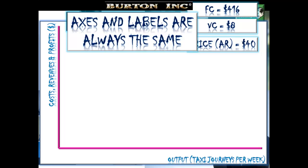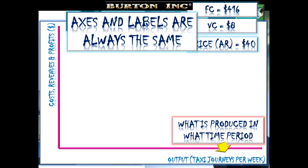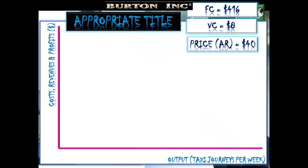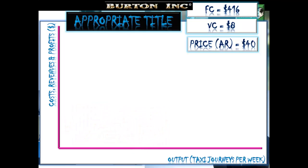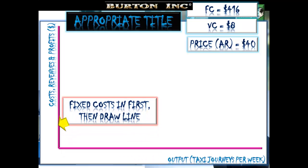Cost, revenues, and profits in dollars and output on the X-axis — what's produced in what time period. The IB Business and Management examiner will be looking for a nice even scale. It's perfectly acceptable to use a scale break, and often you'll need to use one, but after the scale break keep your scale nice and even. We'll start by drawing our fixed costs in first: $416.